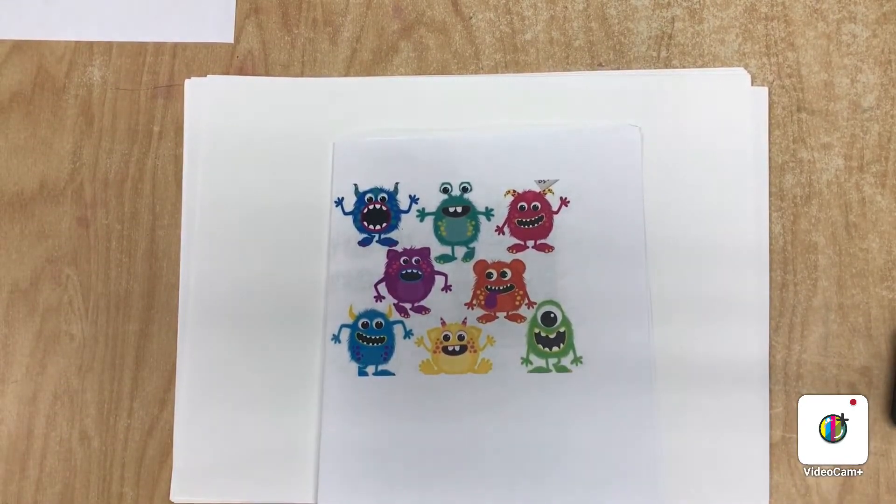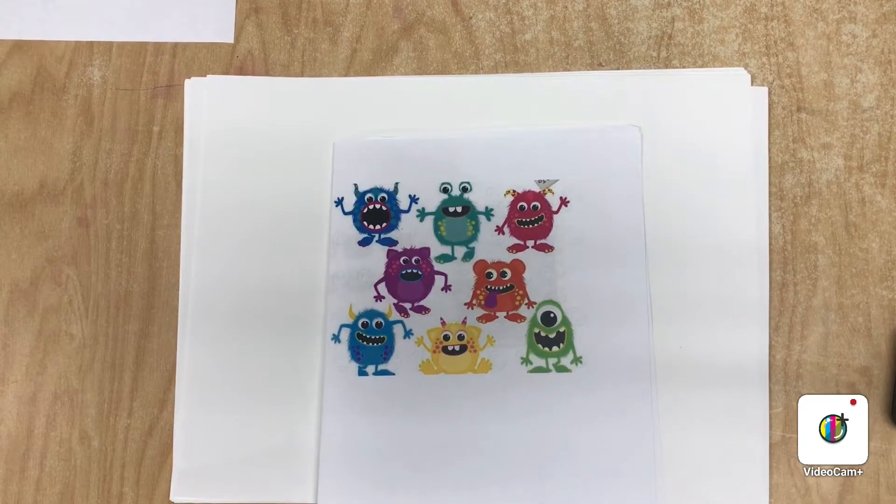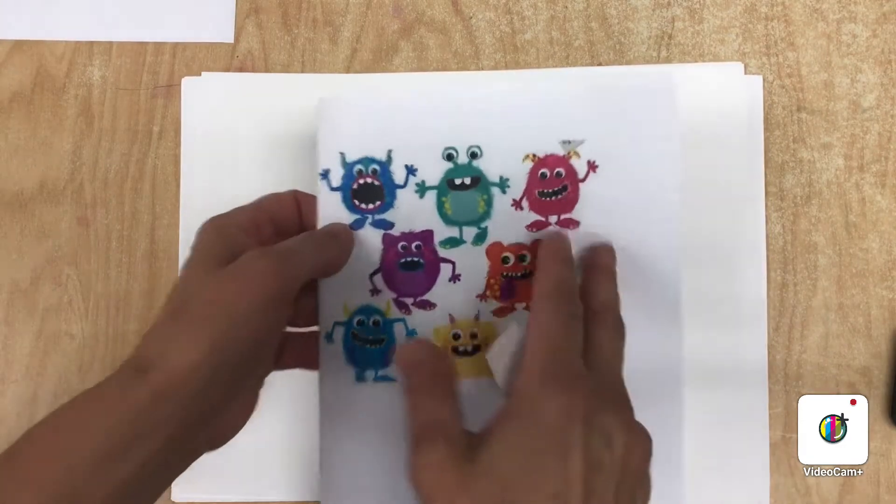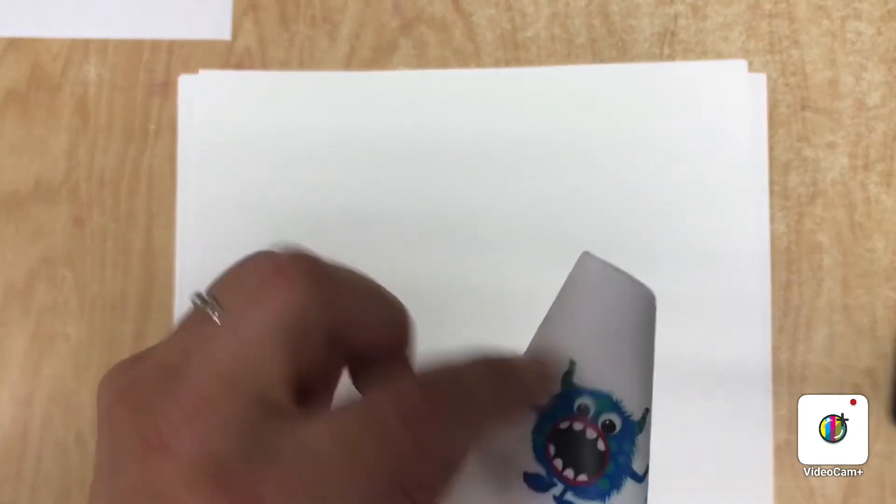So today we're going to draw monsters, any kind of monster you want, but it has to be fuzzy or have some kind of texture. Remember, texture is the way something feels, and artists make things look like they have texture by putting lines and sometimes shadows and dark spots.